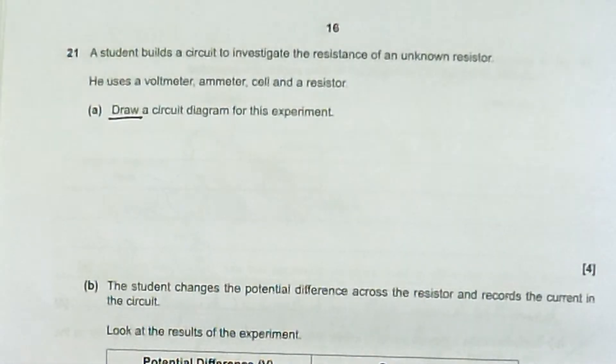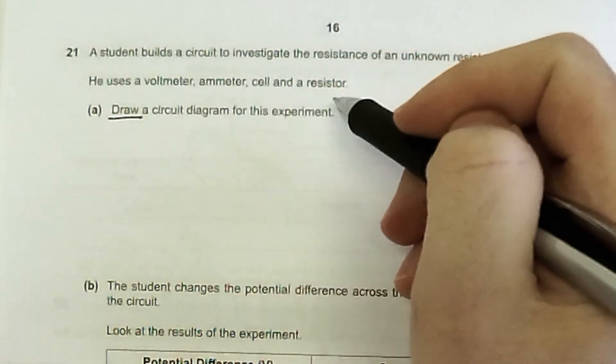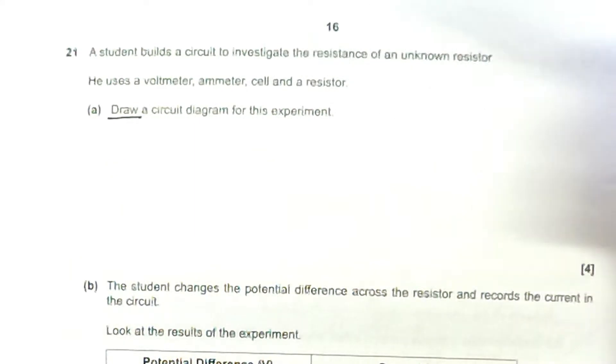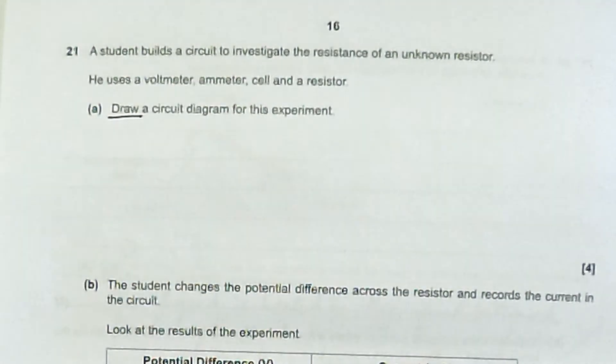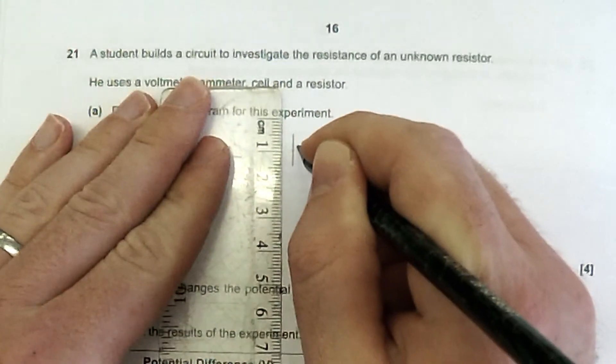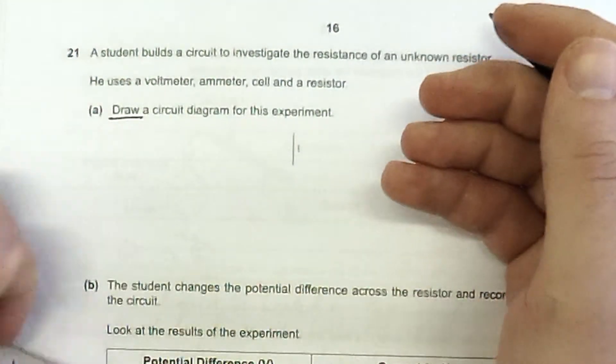It asks you to firstly draw a circuit diagram for this experiment. So there's a mark actually for knowing the correct symbols for all of these. There's a mark for getting the voltmeter and the ammeter and the resistor and the cell all in the correct series or parallel, however they should go, in the circuit. So this one should be a really simple set of marks because you should know this circuit diagram really well because you've been revising your practicals.